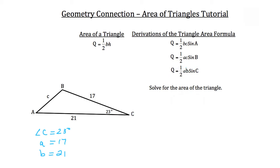So the formula is: Q, the area of the triangle, is equal to one-half times side length a, which is 17, times side length B, which is 21, times the sine of angle C — so the sine of 23 degrees.